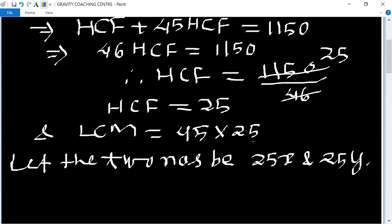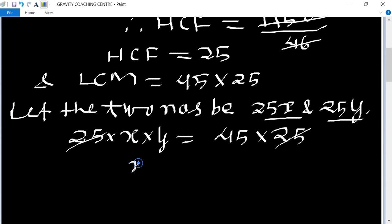And LCM equals 45 into 25. So the LCM of 25x and 25y is 25 into x into y, which equals 45 multiply 25. Cancel 25, so the product of x and y equals 45.